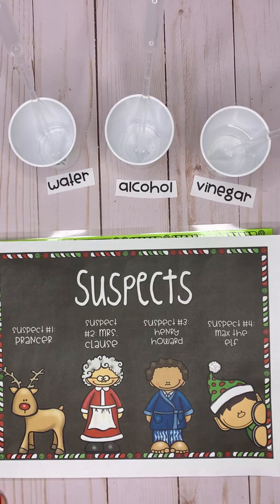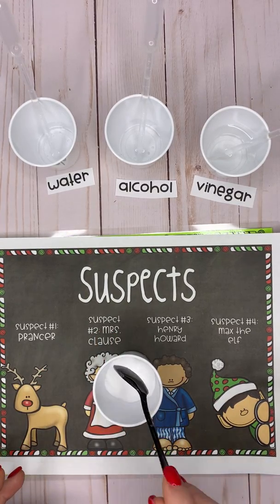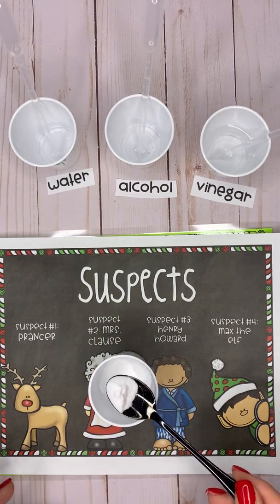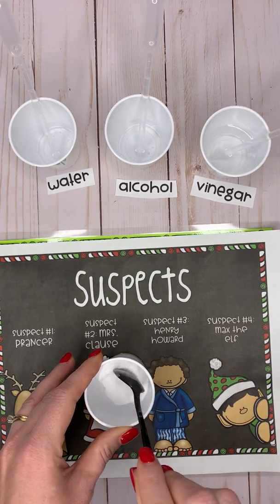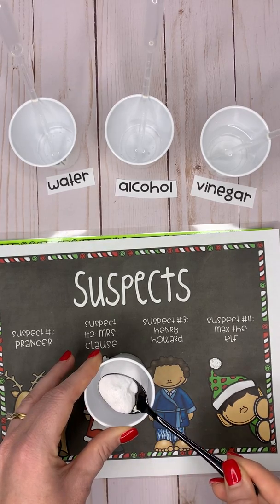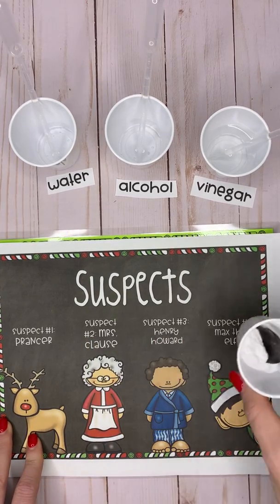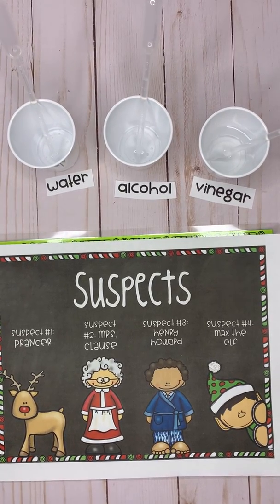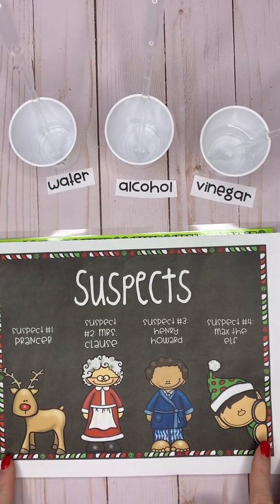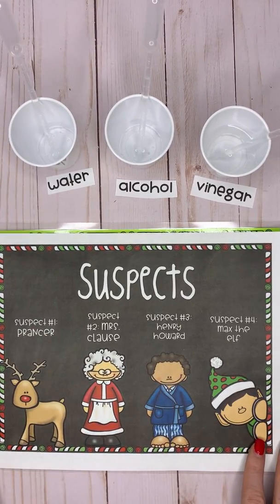We're going to try to figure out if one of these suspects was the donor of that white powder — who left the white powder at the crime scene? So we're going to test this substance found at the crime scene; I have a little bit here. Before we get started I want you to form what's called a hypothesis. A hypothesis in science is what we call a guess, and it can't just be a random guess — it has to be an educated guess, so we've got to use what we know about science to try to form one.